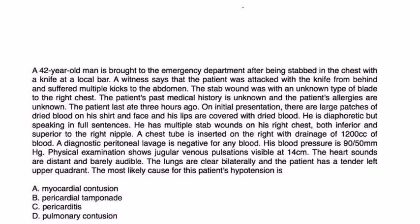Let's look at some clinical vignettes. A 42-year-old man is brought to the emergency department after being stabbed in the chest. He suffered multiple stab wounds to the right chest. On presentation, there are large patches of dried blood on his shirt and face, he is diaphoretic but speaking in full sentences. A chest tube is inserted on the right with drainage of about 1,200 cc's of blood. His blood pressure is low.